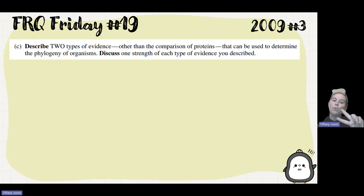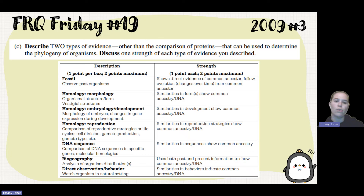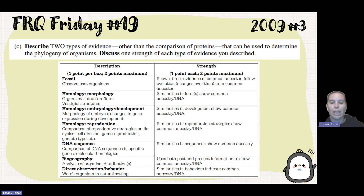Part C tells us to describe two types of evidence, other than comparison of protein, that can be used to determine the phylogeny of organisms, and then identify the strength of each type of evidence. You have to think about all the different evidence for evolution: talking about fossils, homologous structures, embryology, biogeography, looking at DNA changes instead of protein changes, looking at morphology, looking at direct observations of behavior. Most of these strengths connect back to the common ancestor. You can pause if you need to look over those.